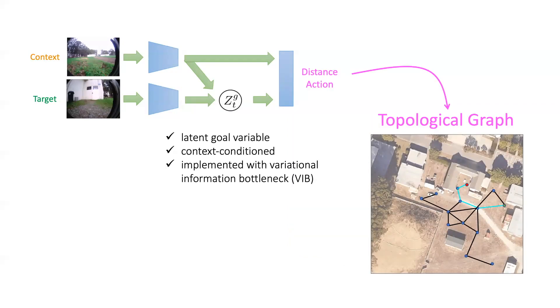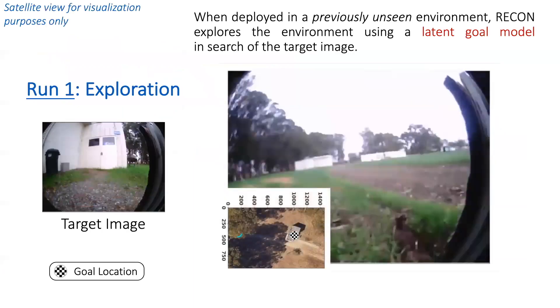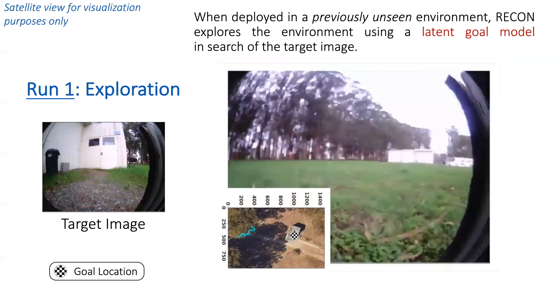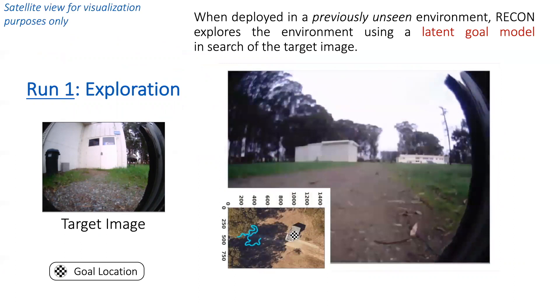During deployment in a new environment, we use this learned distance function to incrementally generate a topological graph over a subset of observations. We sample goal latents and attempt to reach these sampled goals at the frontier of this graph to rapidly explore novel environments. When deployed in a previously unseen environment, RECON explores the environment in search of the target image using sampled goals from the latent goal models and builds a topological graph of this environment.